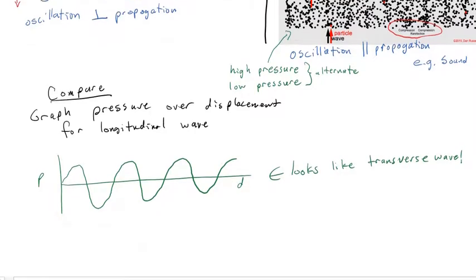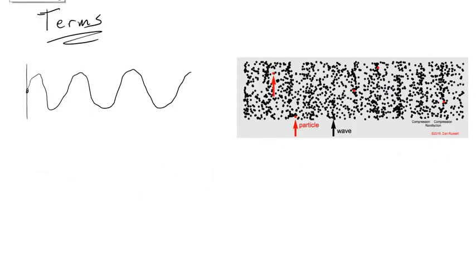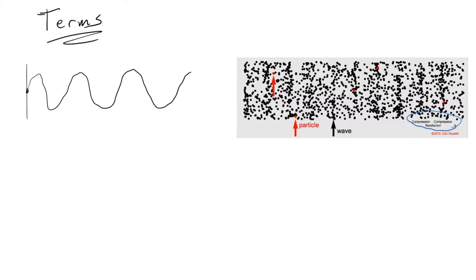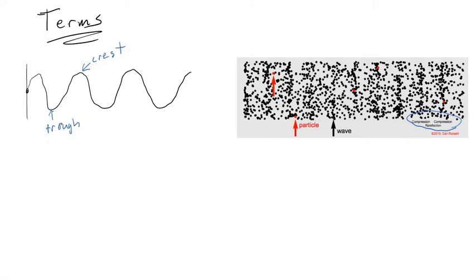Now I want to talk about some terms. Taking our two different types of waves — longitudinal and transverse — I'm going to label some different things. Compressions are where the particles are close together, high pressure. Rarefactions are where they're far apart. The transverse wave also has these things but with different names: the top is what we call a crest, and the bottom is what we call a trough. For example, if you're describing a water wave, you can describe the top as a crest and the bottom as a trough, or a wave along a spring or a rope.